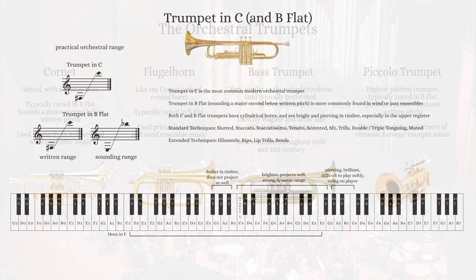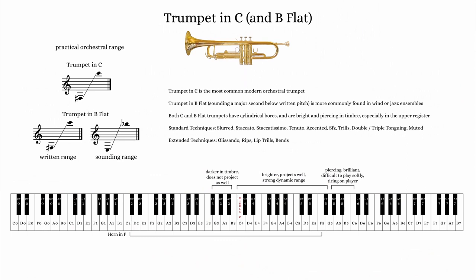The range of the modern trumpet in C is from F-sharp 3 to C6, although the upper range can be extended upwards by advanced players. The B-flat trumpet has the same written range but sounds a major second lower. Because of its slightly larger size, the B-flat trumpet is timbrally just a bit warmer than the C trumpet, which is perhaps the main reason it has become a fixture in jazz and wind ensemble music.